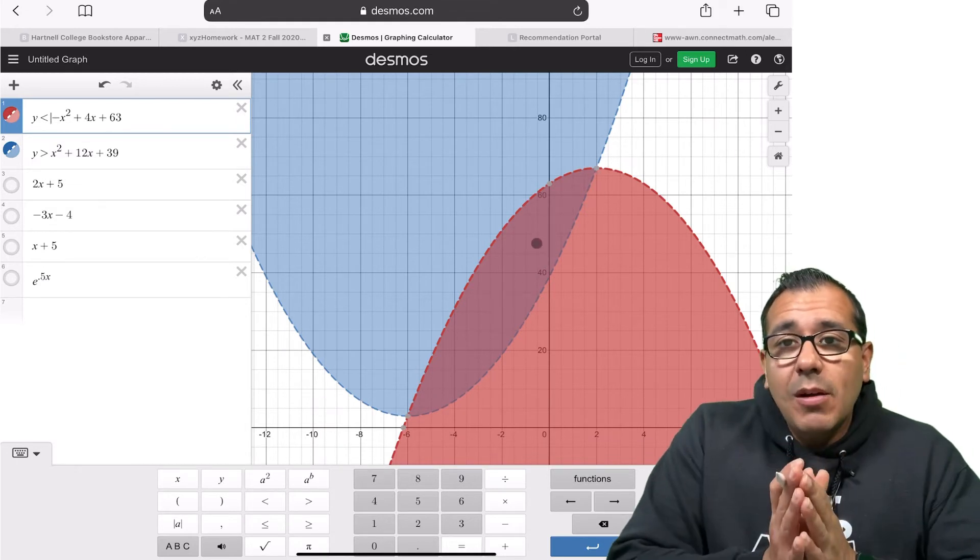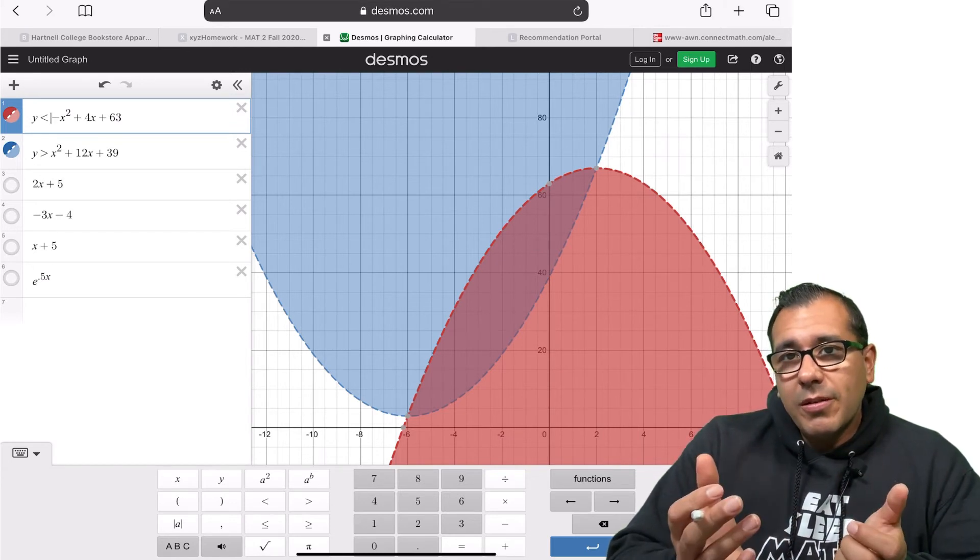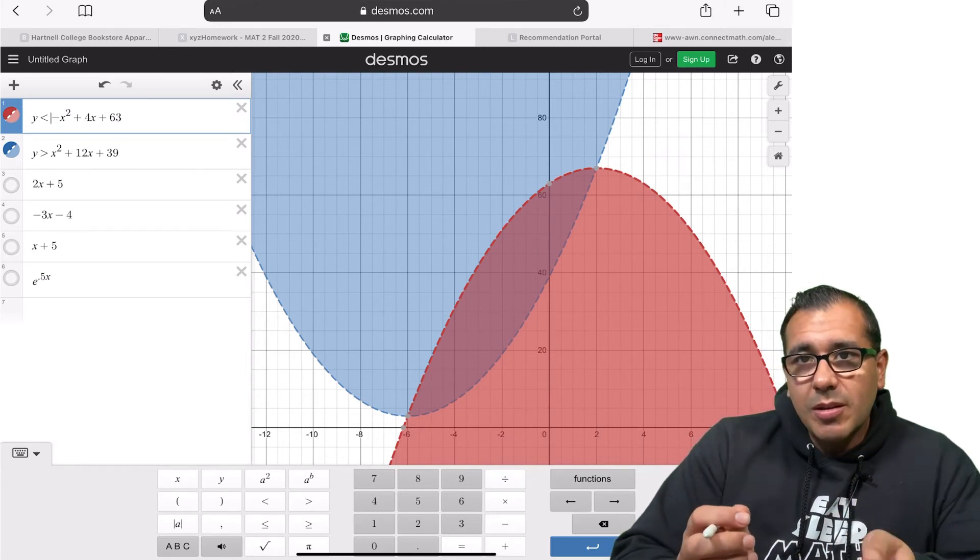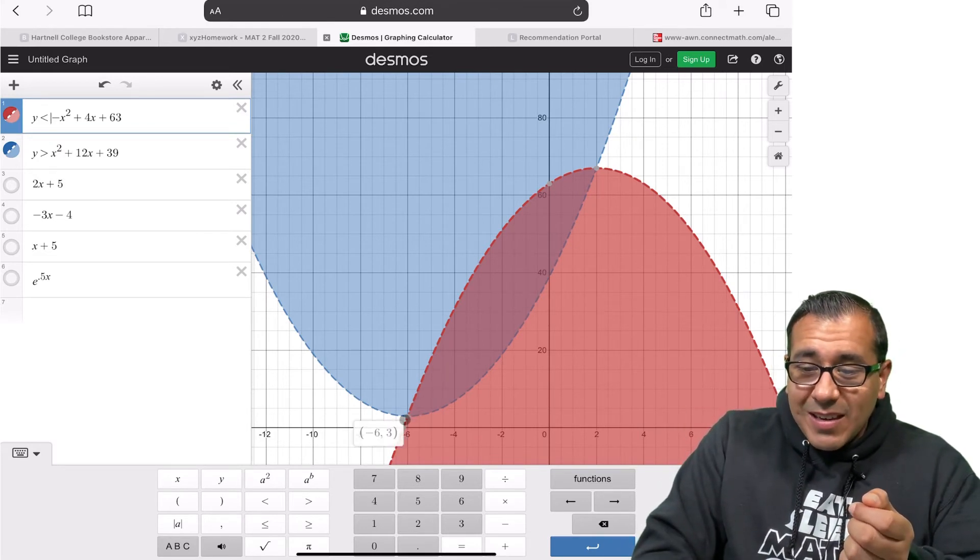And one thing that we need to do is we need to say, where are we going to start this integral? What are the limits of integration here? Where are we going to start and where are we going to finish? Well, here we can see we're going to start at negative six.